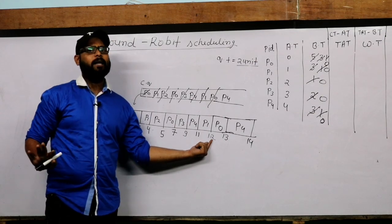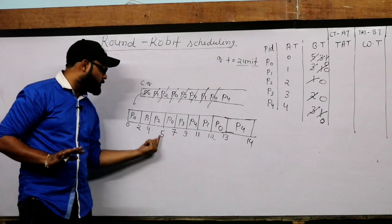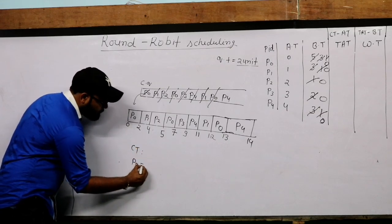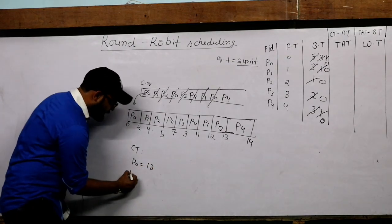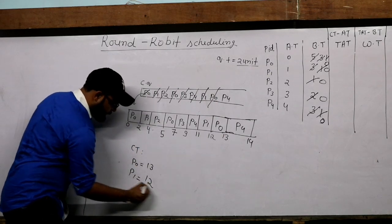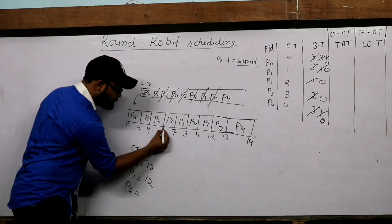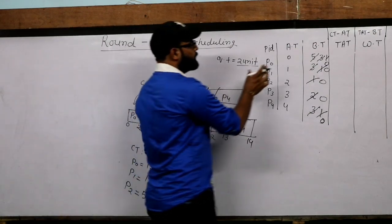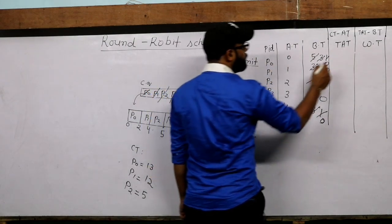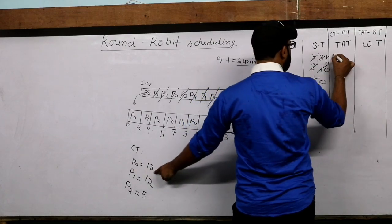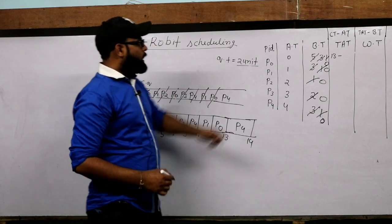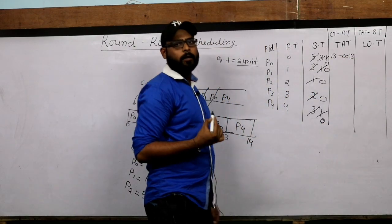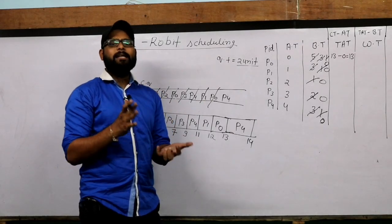Come to the GATE questions — they ask about turnaround time and waiting time. The turnaround time formula is: Completion Time minus Arrival Time. Completion time means when the process finally completes execution. P0 completes at time 13, P1 completes at time 12, P2 completes at time 5. The boundary line where the process ends is called completion time. Turnaround time of P0 = 13 minus 0 = 13.